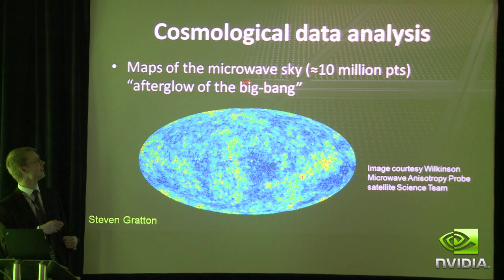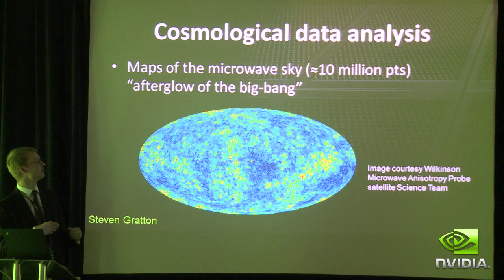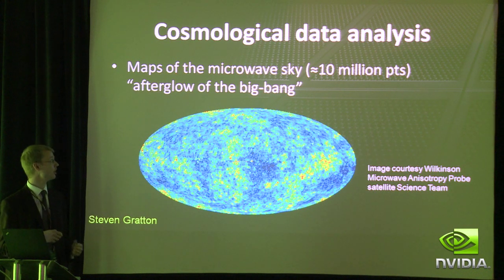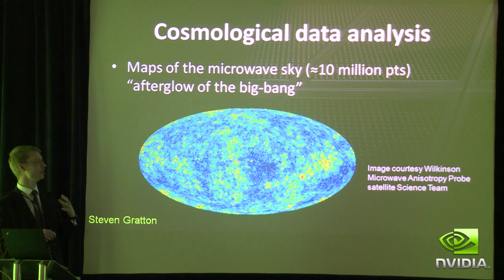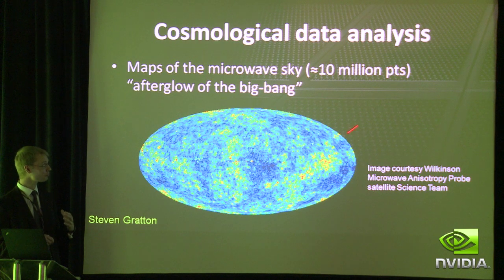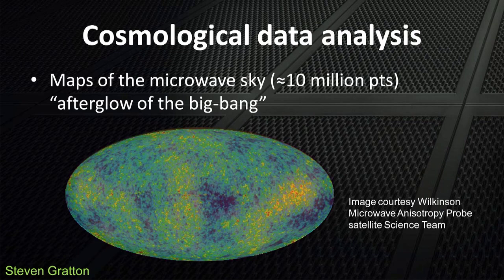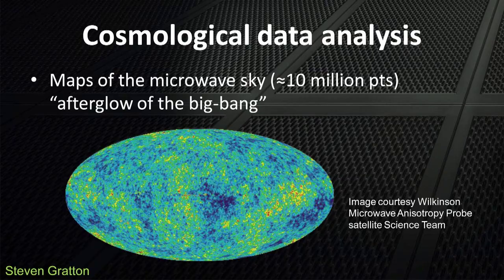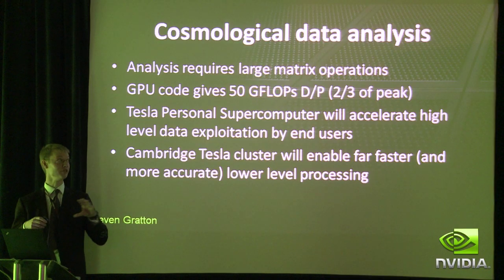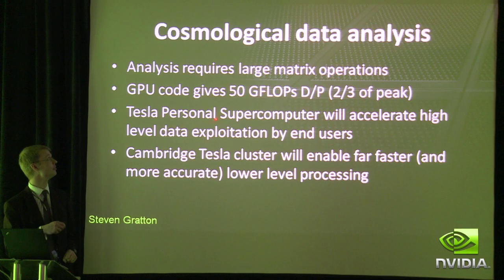It turns out you can get data from the sky — the microwave background radiation — and it's about 10 million points. In order to analyze that data, what it boils down to is large matrix manipulations. This is a commonality between different fields.